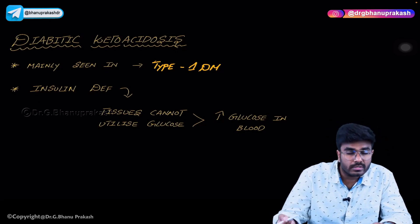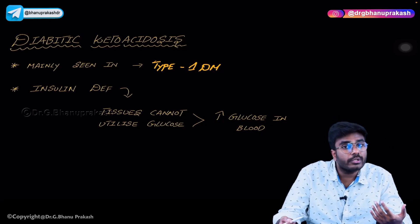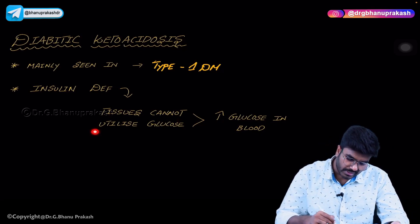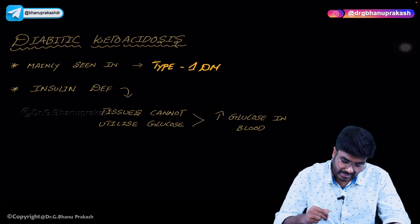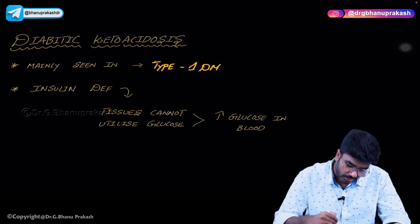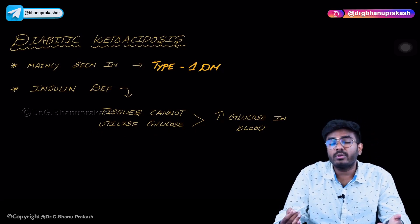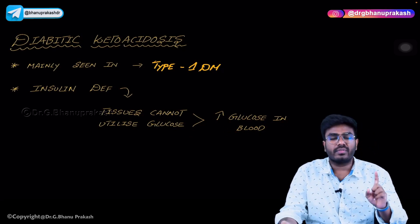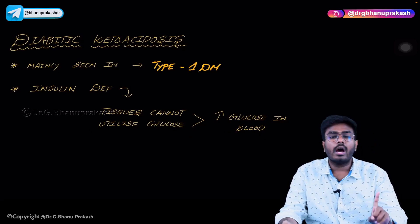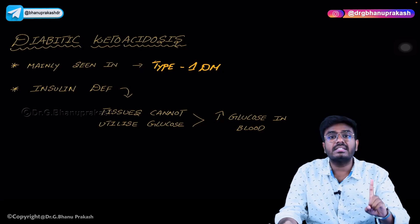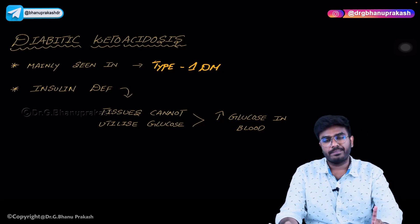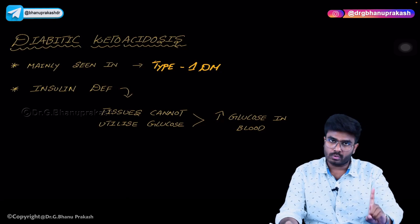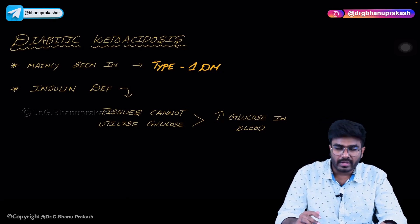Whenever there is no insulin, we know that tissues cannot utilize glucose. So glucose utilization by the tissues is not happening. Blood glucose levels are increasing — the first point is that there is already increased glucose in the blood, but tissues are not able to utilize it.